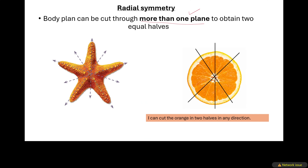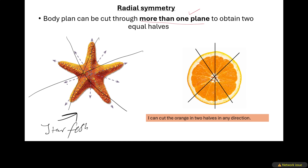When we talk about radial symmetry, for example this is a starfish. In a starfish, we say that it is radially symmetrical — you can cut it this way, you can cut it this way, you can cut it this way, just to obtain two equal halves. I've made a good example here of an orange that explains radial symmetry. When you want to get two halves, you can cut it like this, or like that, or straight — you will still obtain two halves in whatever way you cut it. So in radial symmetry, the body can be cut through more than one plane to obtain two equal halves in any direction.